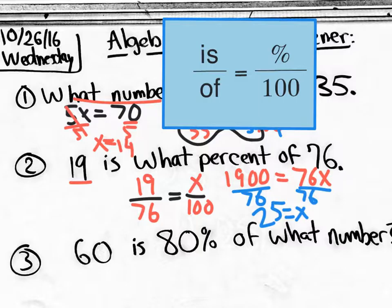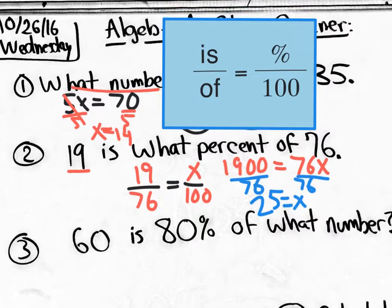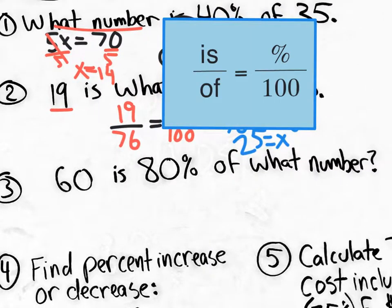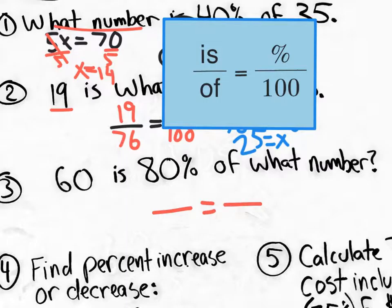So 19 is 25% of 76. To check: doubling 19 gives 38, which is half of 76 (50%). Tripling 19 gives 57, and 19 times 4 gives 76, which is 100% of 76. Number three: 60 is 80% of what number? The 'is' is 60, the percent is 80 over 100, and the 'of' is unknown, so we put x in the denominator.